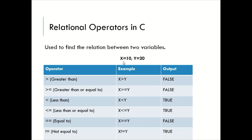Let us assume that x has the value 10 and y has the value 20. The expression x greater than y checks whether x is greater than y. If x is greater, it returns true; otherwise false. In this case, 10 is not greater than 20, so it returns the result false. Every relational operator will generate the output either true or false.